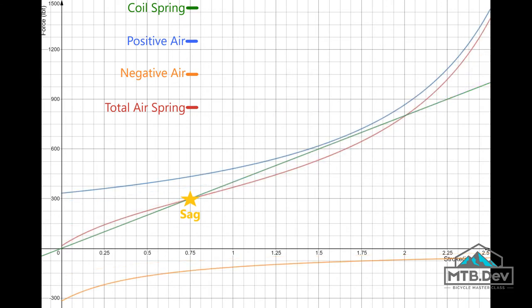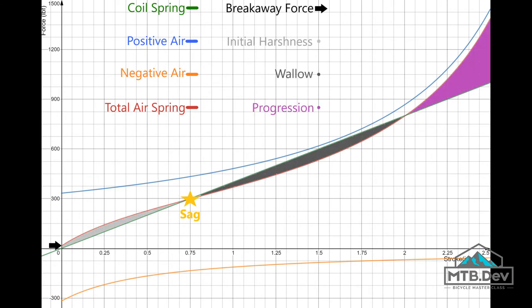Here we have changed only the transfer port for the positive and negative chambers. Now the breakaway point is very low, and the areas of initial harshness and wallow are insignificant. Through the mid-stroke, the air spring behaves very similarly to a coil spring. The great advantage here is that we can tune bottom-out resistance by adjusting positive air volume.